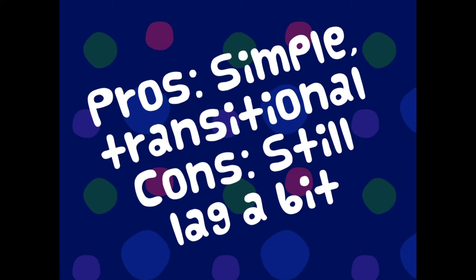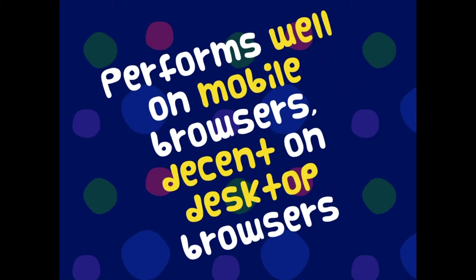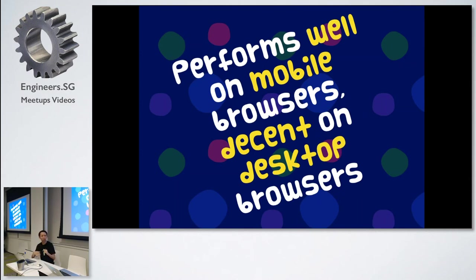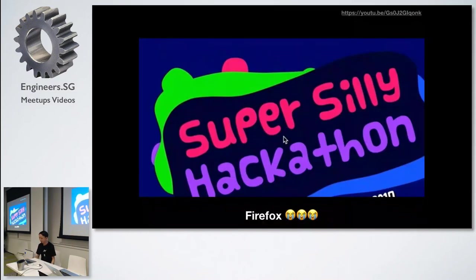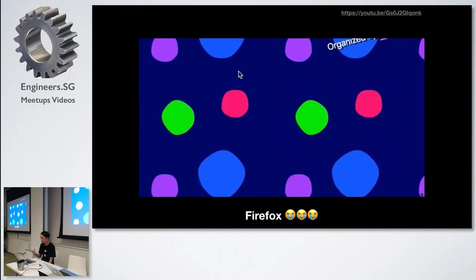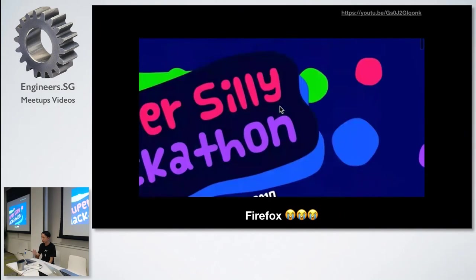For some reason, it still lags a bit on desktop, and I don't really know why. It performs very well on mobile browsers but only decent on desktop. That's a weird thing for me because mobile phones are less powerful than desktop — but it turns out it performs better on mobile. On mobile it's super smooth; on desktop it lags like playing a game at very low frame rate. Something is very wrong.